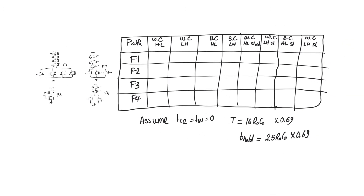Notice that we are using T_setup and T_CQ equal to zero, and that this network will be operated using a clock period of 16 R0C0 × 0.69. We need to check that it can be operated at this frequency. If there is any path which operates longer than this given period, it will cause a setup time violation because it will have negative slack. We also know that T_hold in this circuit is equal to 2.5 R0C0 × 0.69.